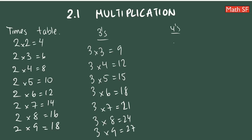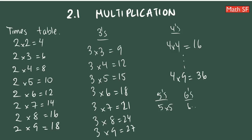The same idea applies going forward. For the 4s, we start at 4 times 4, which is 16, up to 4 times 9, which is 36. For the 5s, we start at 5 times 5; for the 6s, 6 times 6; for the 7s, 7 times 7; for the 8s, 8 times 8; and for the 9s, 9 times 9.